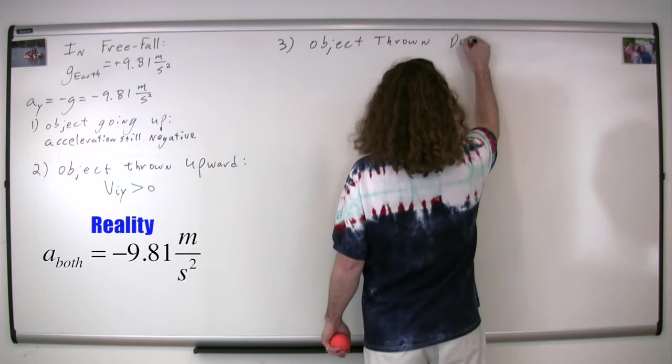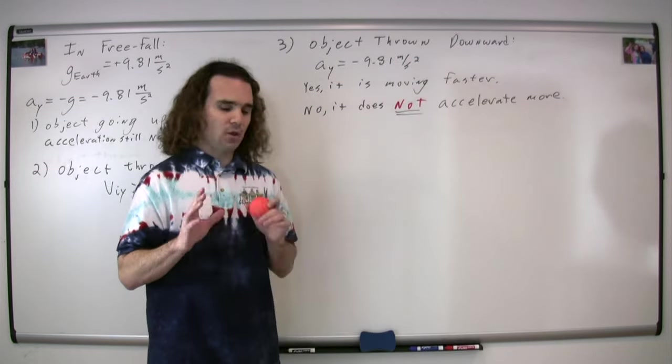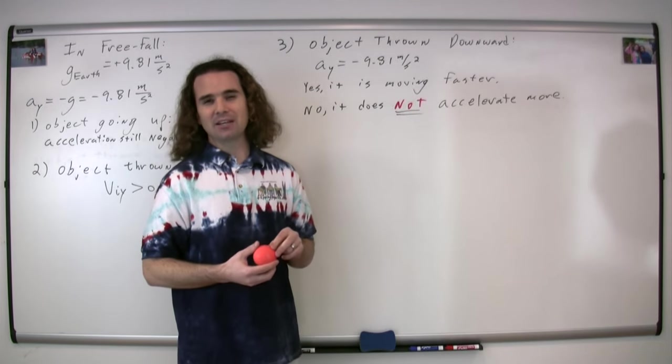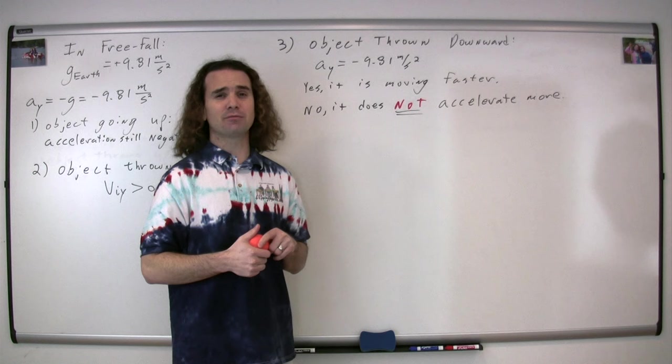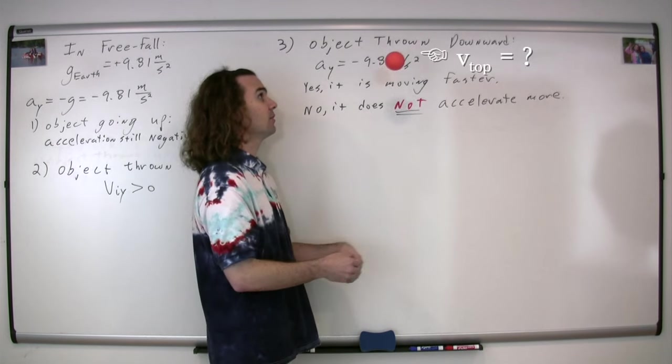Remind me, Billy, what is the velocity in the y direction for an object in free fall at the very top of its path, right there? The velocity at the top in the y direction is zero. And Bobby, please explain to me one way we know why. On the way up, the velocity is positive and on the way down, the velocity is negative. So at the top, the velocity must be zero.